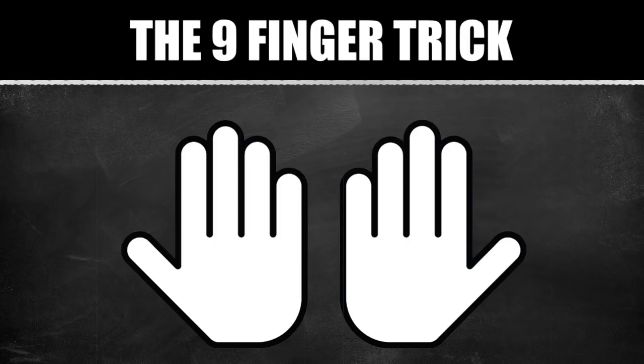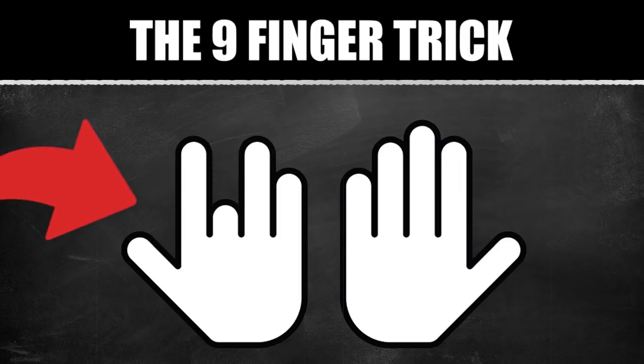Put the 3rd finger on your left hand down and count 3 times 9. On the left side of your folded finger you have 2 fingers, so 20. And to the right of that finger there's 7, so 27. 3 times 9 is 27.